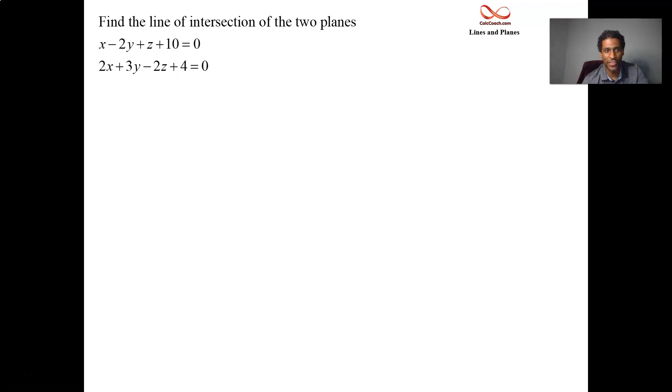Let's look at the normal vectors. The first plane has a normal vector of 1, -2, 1. Just looking at the equations of the plane you know the normal vector. It's the coefficients on x, y, and z. So the second plane's normal vector is 2, 3, -2. There's no way to get from the first normal vector to the second normal vector by multiplying by a constant. So no.